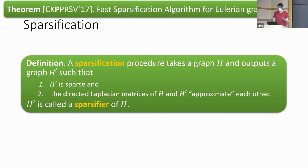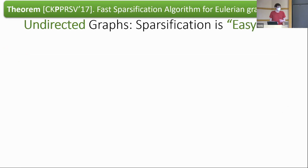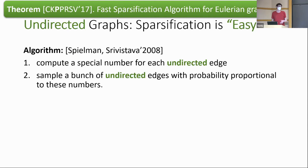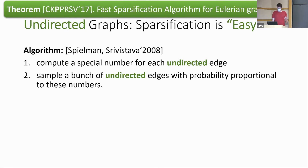For undirected graphs, sparsification is now well-understood. There's an algorithm of Spielman and Srivastava from 2008: it takes an undirected graph and outputs a new graph whose edges are a combinatorial subset of the original graph's edges (with potentially different weights) that approximates the original but is sparse. It computes a special number for each undirected edge called the leverage score, then samples edges with probability proportional to these scores — essentially importance sampling. You can show that with high probability this approximates the original graph and you don't need too many samples, so you get a sparse graph, though you do need to adjust the weights.